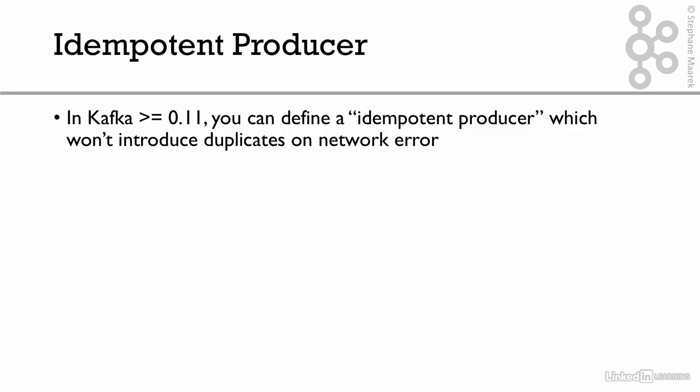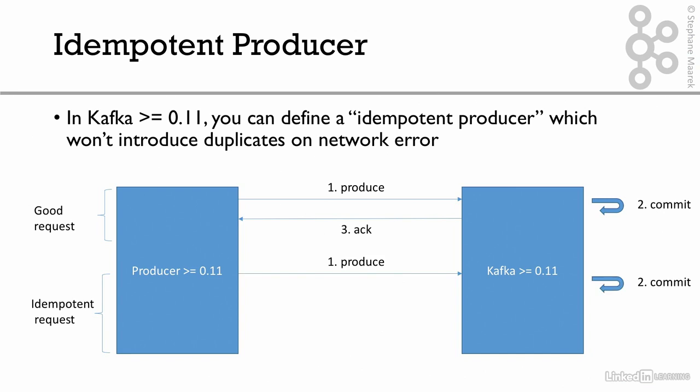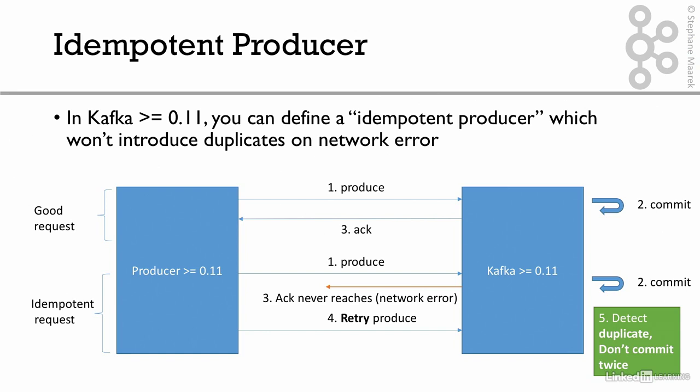With the idempotent producer, how does it solve this? If you have Kafka 0.11 or above, you can define an idempotent producer. On a good request, same behavior: produce, commit, ACK. But when you have an idempotent request and the ACK never reaches the producer, the producer retries — but this time it also includes a produce request ID, which is a new thing from 0.11. Using that produce request ID, the Kafka broker is able to detect that this is a duplicate request. So Kafka says it's not going to commit the same produce request twice, but it will send back an ACK saying it already received it once. From the producer's perspective, the data was sent once and received once. From Kafka's perspective, deduplication happened at the produce request level and the message is committed only once.